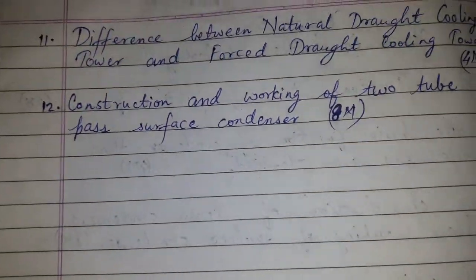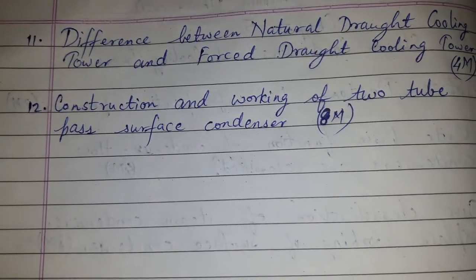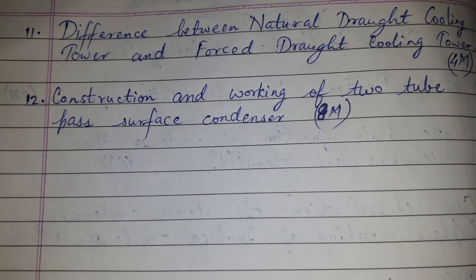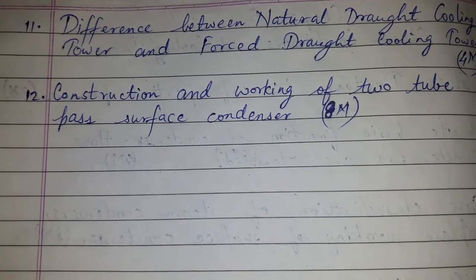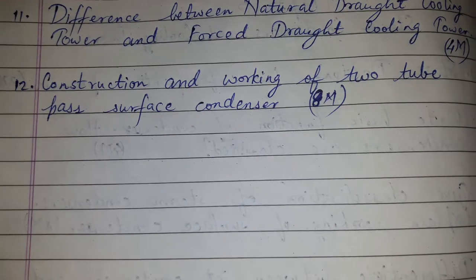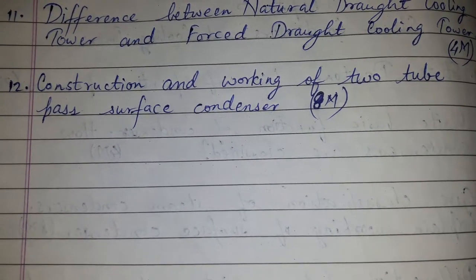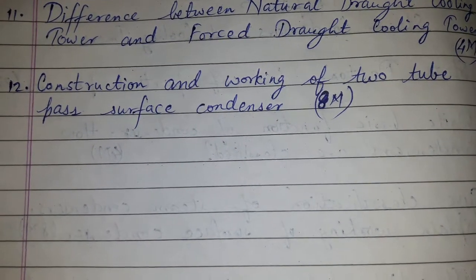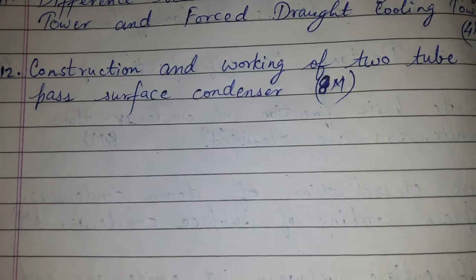Question No. 11: Difference between natural draft cooling tower and forced draft cooling tower for 4 marks. Construction and working of 2 tube pass surface condenser for 8 marks.